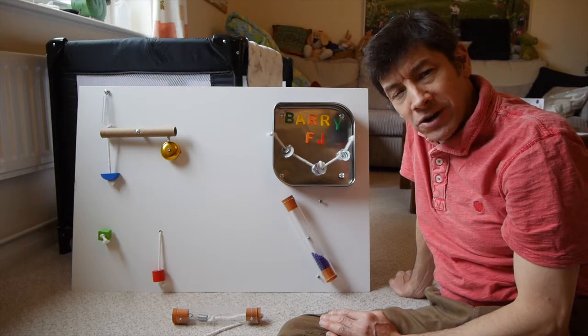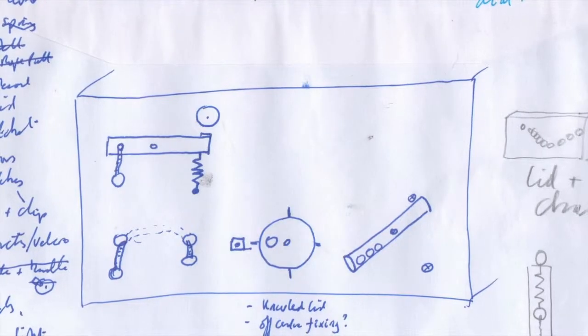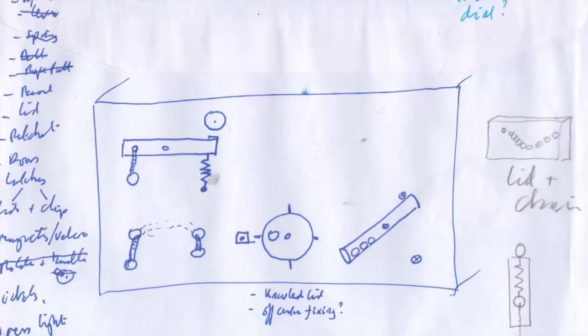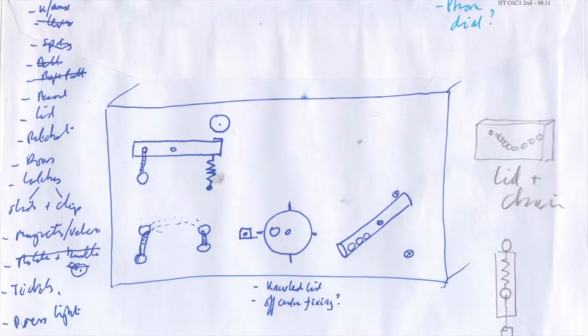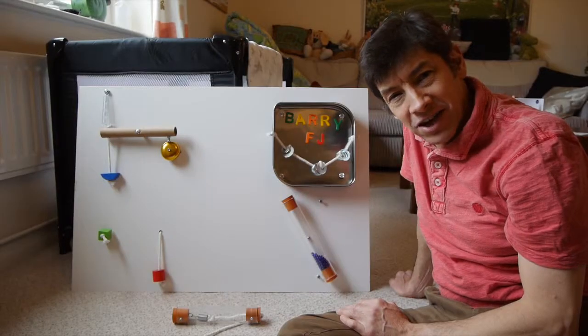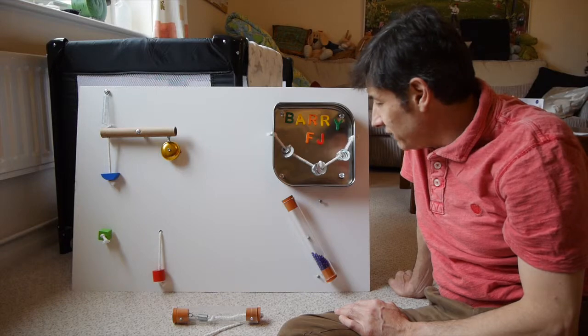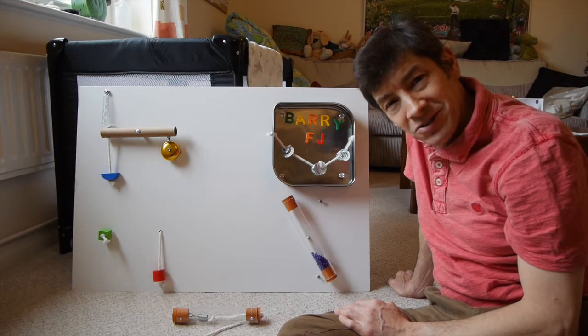Then I had a train journey and I sat on the train thinking what can I do, so on the back of an envelope I started designing this. I just thought physics mechanisms is the way to go, things that he can pull and twist, etc. I got home, looked around the house and found lots of bits and pieces that I could use to build it.